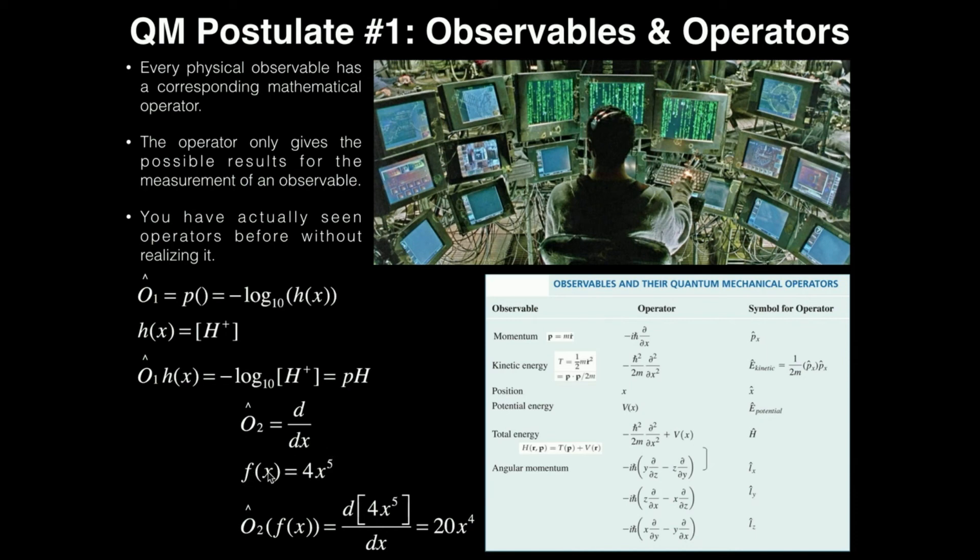So I'm now going to define a function f of x. Let's say it's 4 times x to the 5th. So if I apply operator 2 to f of x, that means we're going to be taking the first derivative of that function 4x to the 5th. And that's just a power rule derivative, so we would get 20x to the 4th. So that's really all the operator does. You put the operator physically in front of a function, and it tells you to do whatever that operation is on the function.